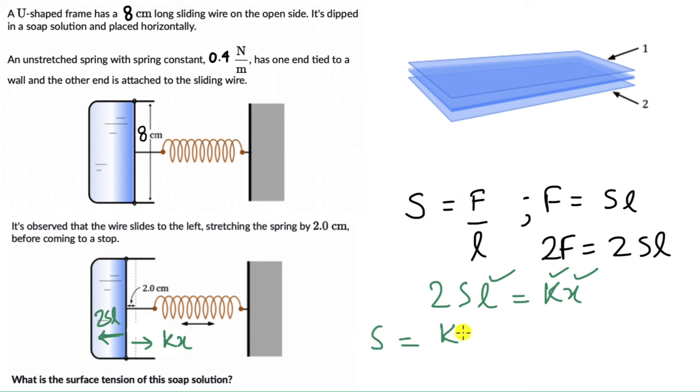S equals KX divided by 2L. Substituting the values, K is 0.4 times X, which is 2 centimeters, so we need to change it to 0.02 meters, divided by 2 times the length, 0.08 meters. This gives us 0.4 times 0.02 divided by 0.16, which equals 0.1 N per meter.